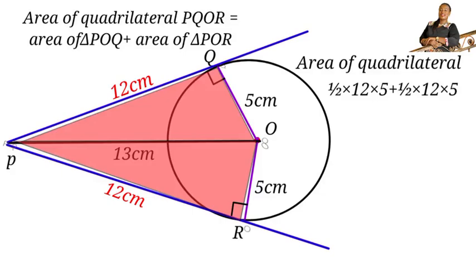Now when we add the area of the two triangles, we have 30 plus 30. And the final answer, which is the area of the quadrilateral, is 60 centimeters squared.